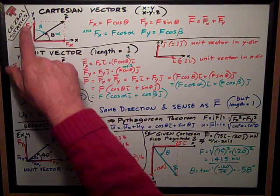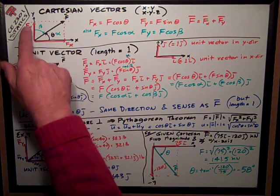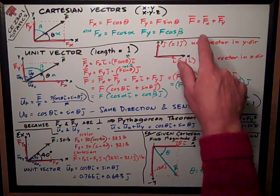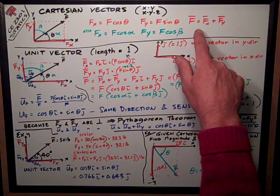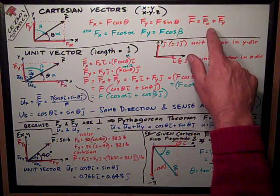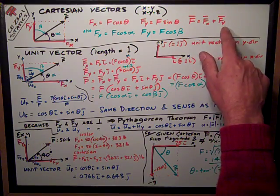fy, the component of the vector f in the y direction, is f times the sine of theta. We can express that in a different way: the vector f is equal to the vector fx plus the vector fy.